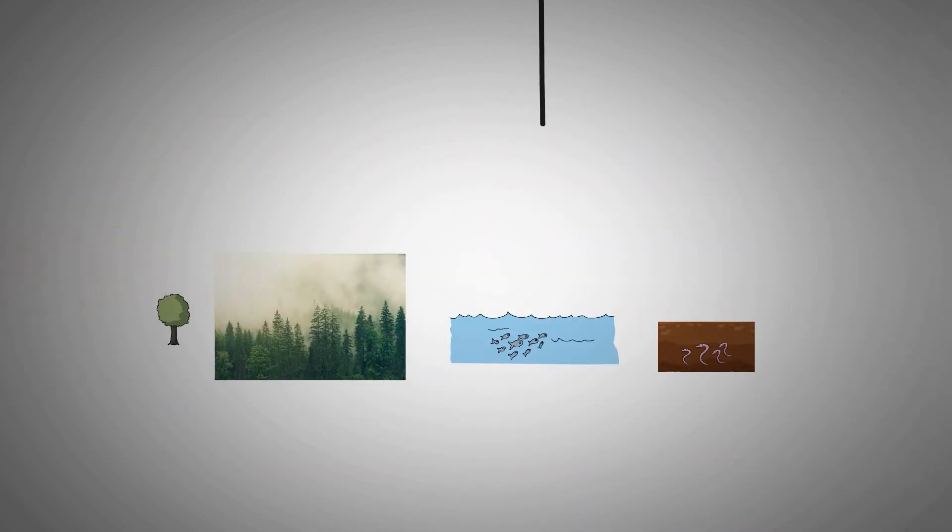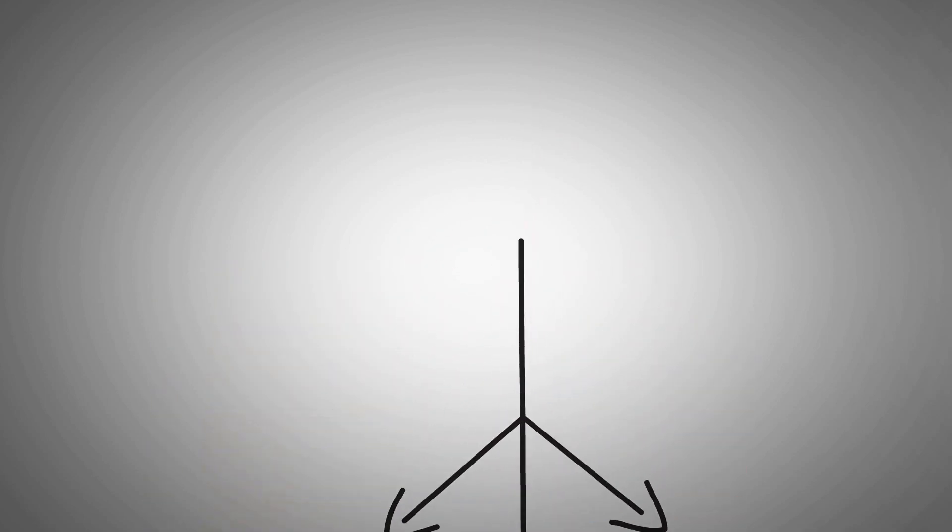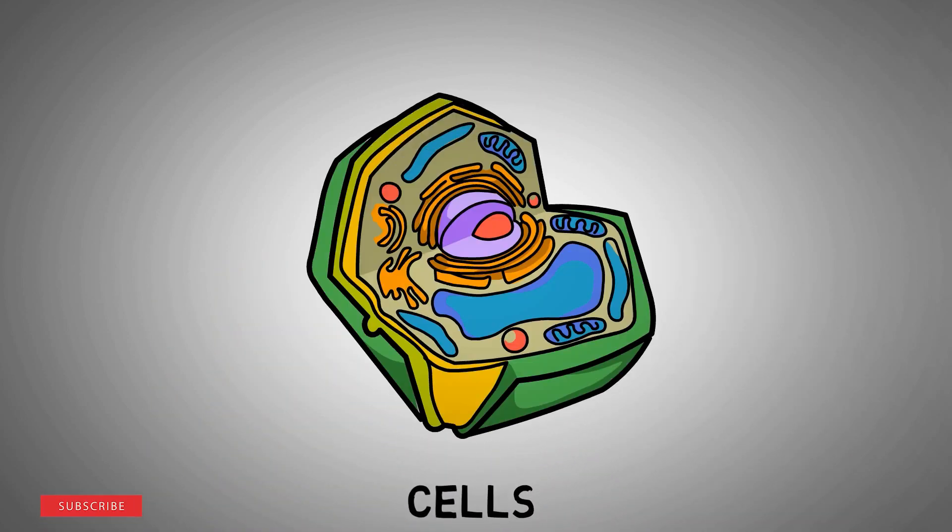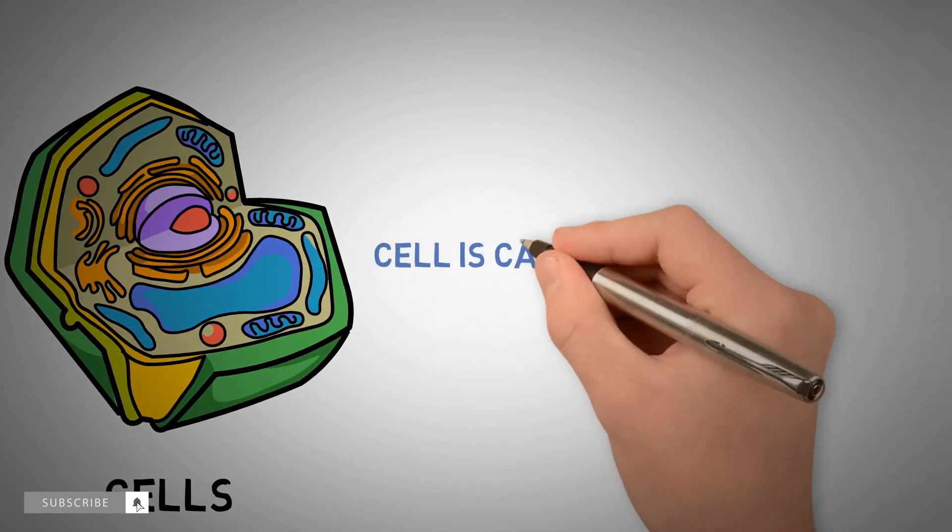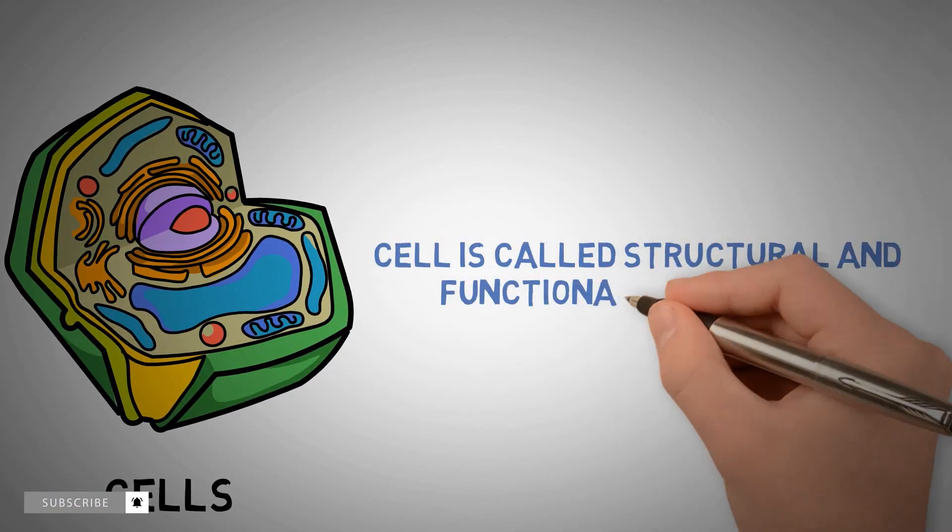All these plants and animals are made up of building blocks called cells. Cell is called structural and functional unit of life.